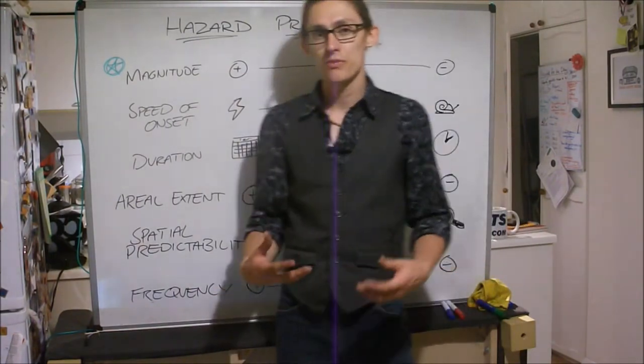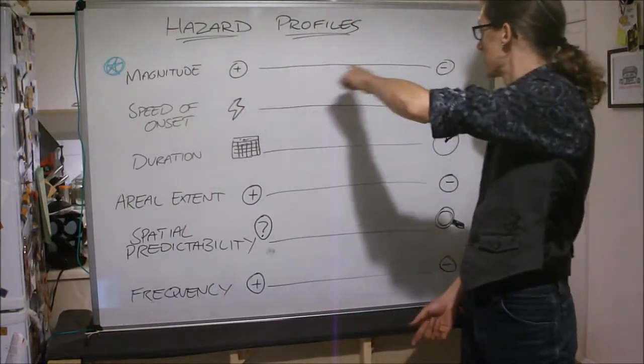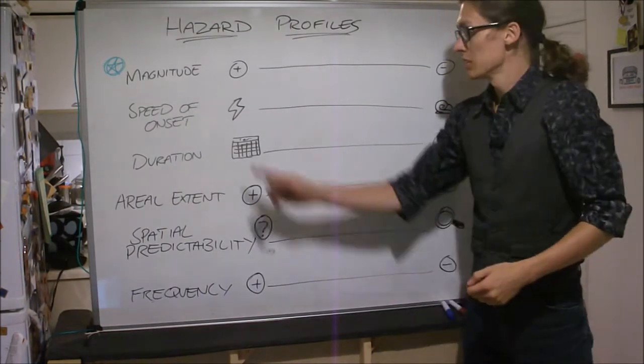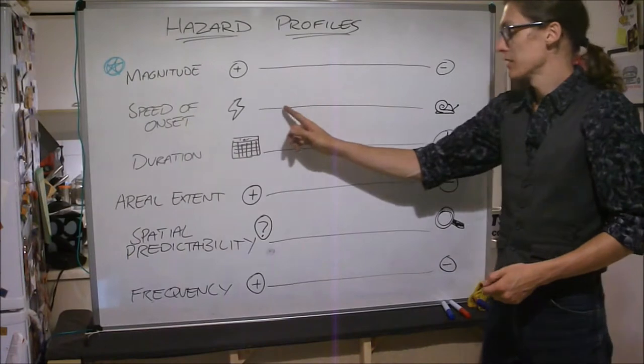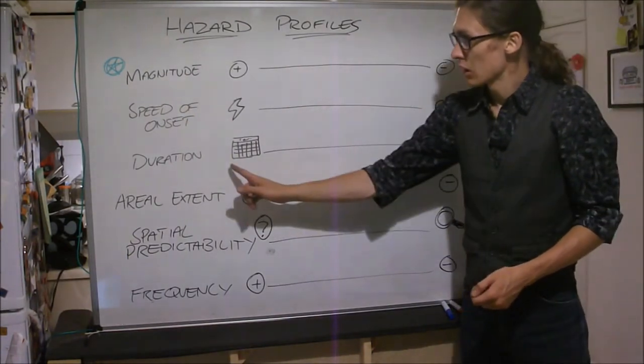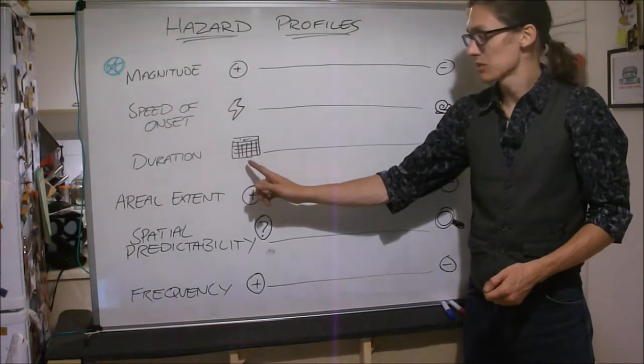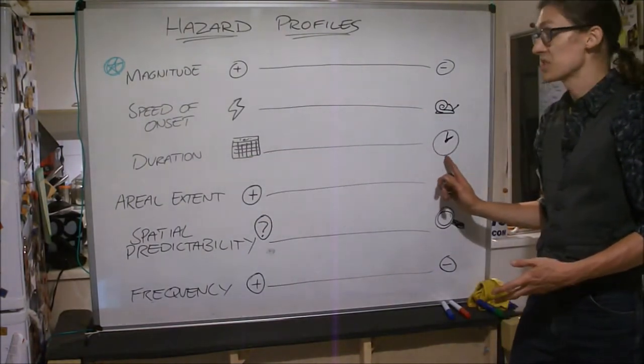And we profile it almost like it's a set of sliders. So here we've got high magnitude down to low magnitude. Very quick speed of onset, the lightning bolt there. Down to slow speed of onset. Long duration over many days. Calendar. Down to seconds or minutes.